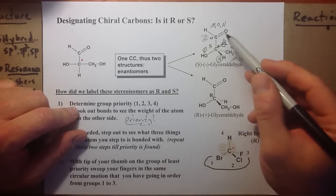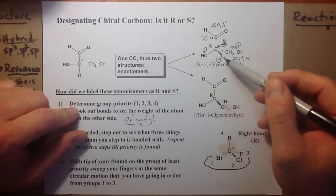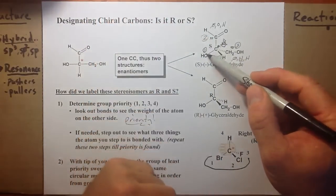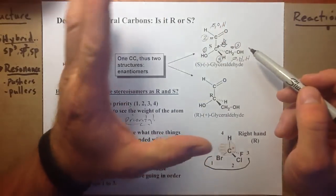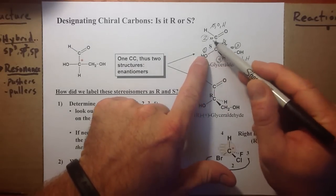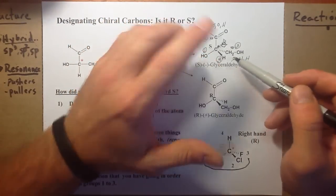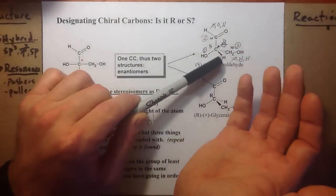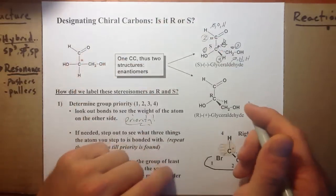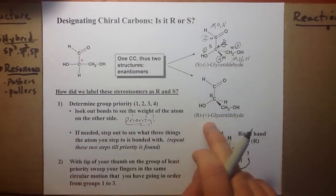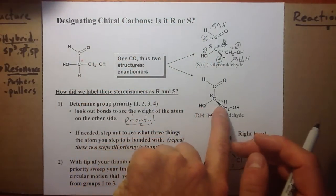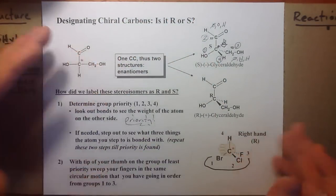For glyceraldehyde, we can do that for S and for R, but now we know where to point our thumb. We would point it towards four, and we would take our left hand, rolling from one to two to three. My left hand would capture the rotation from one to two to three, thumb out because four is out. My right hand, if I put my thumb out, will not capture that. So it's not an R configuration, it's an S.